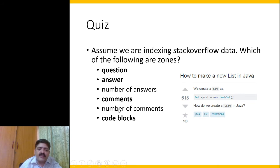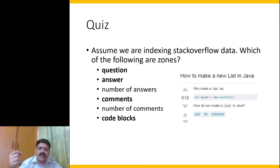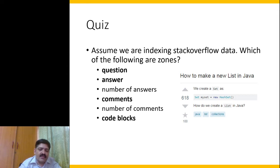The number of answers and the number of comments are not useful for direct matching, but they are useful in query processing. For example, if I want to retrieve all questions which have more than 10 answers, I would issue a query and match against that number — the number of answers. These are treated as fields.